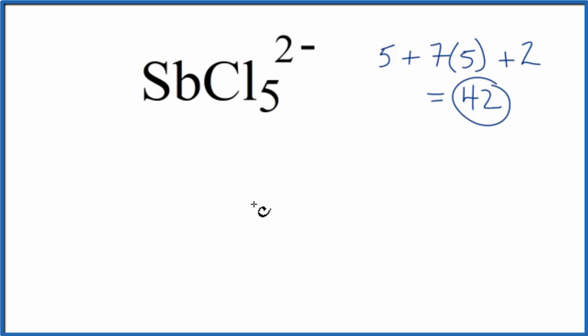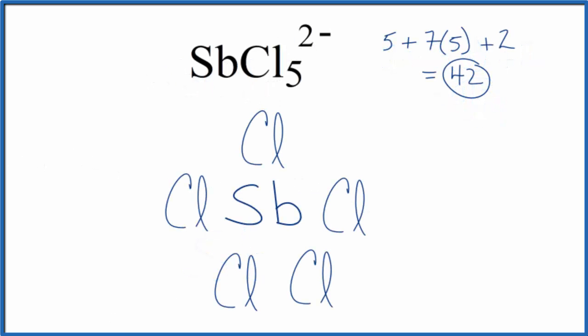We'll put the least electronegative element at the center, that's the Sb, and then we'll put 5 chlorine atoms around it. We'll put a pair of electrons between atoms, and that's going to form our chemical bond.